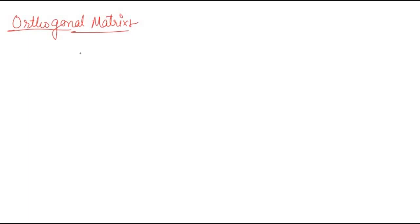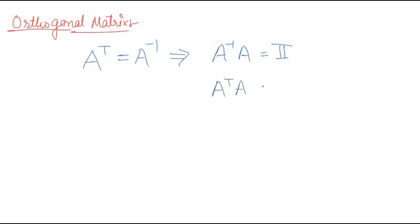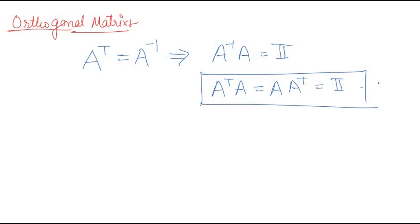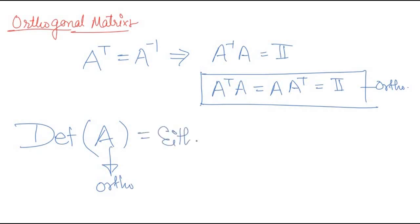Now let's define the orthogonal matrix. A matrix is orthogonal if its transpose equals its inverse: A^T = A^{−1}. Since A^{−1}A = I, replacing A^{−1} with A^T gives A^T·A = A·A^T = I. One key property: the determinant of an orthogonal matrix is either +1 or −1.